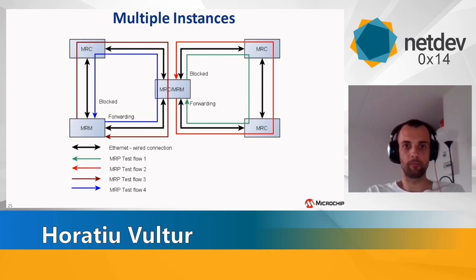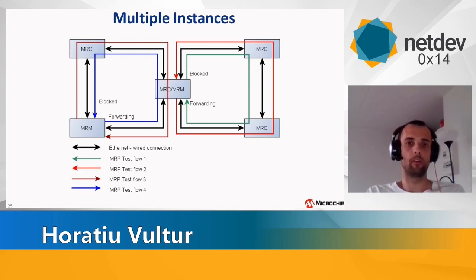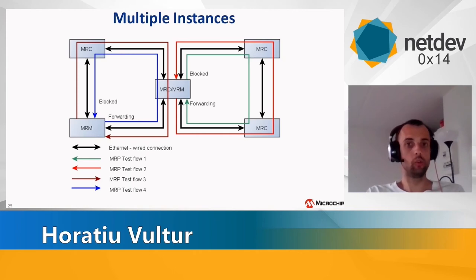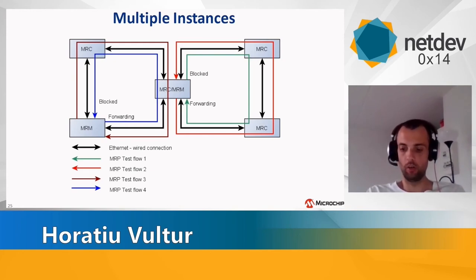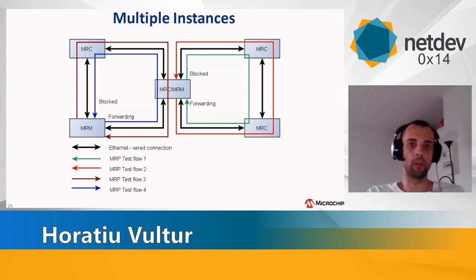The last feature of the standard is that you can have multiple MRP instances on a switch at the same time. For example, if a switch has four ports, you can have two instances because each instance needs two ports. Because of this feature, we could not use the MDB from the bridge to do the forwarding, so we had to implement our own forwarding scheme.